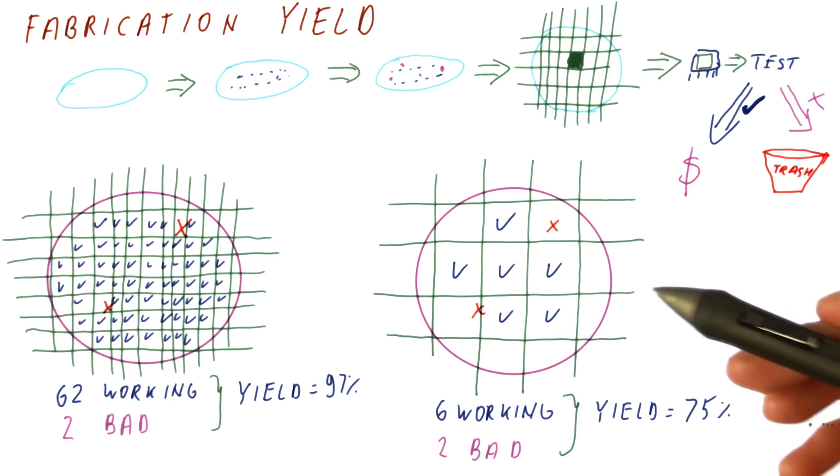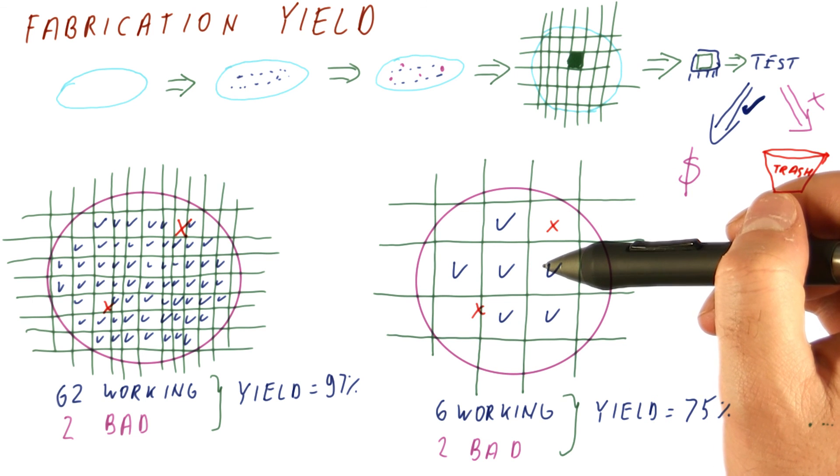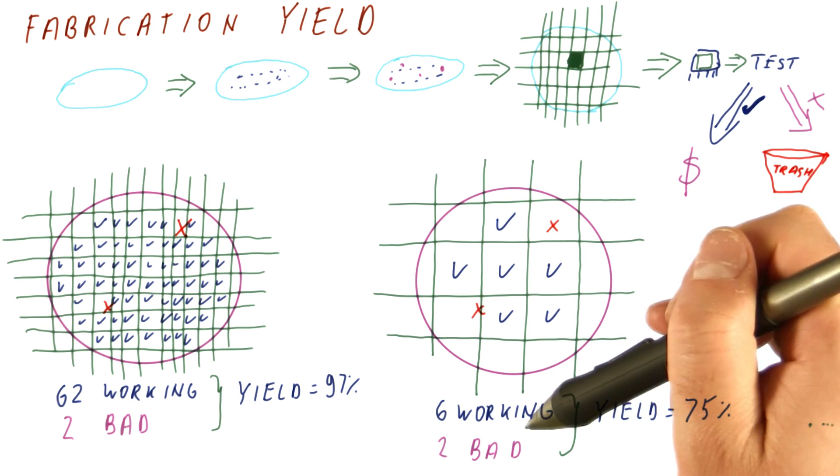So not only did we get fewer chips out of our expensive wafer, we also get a fewer percentage of them working.